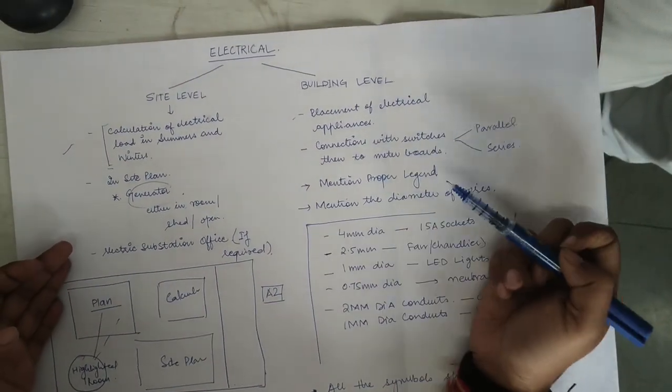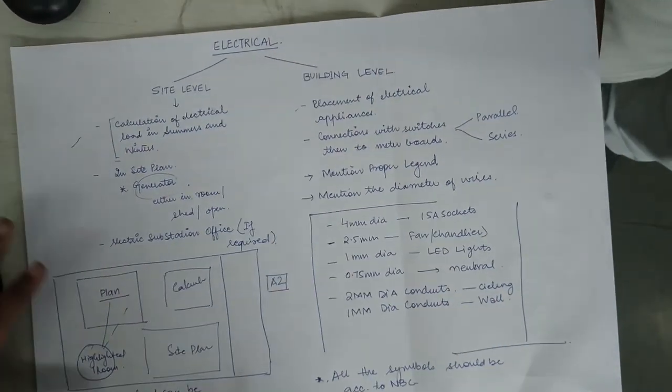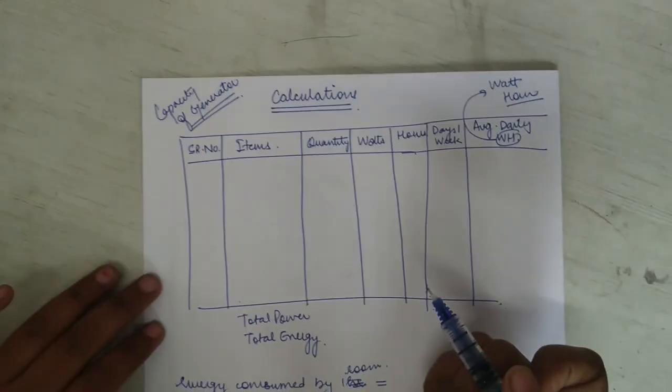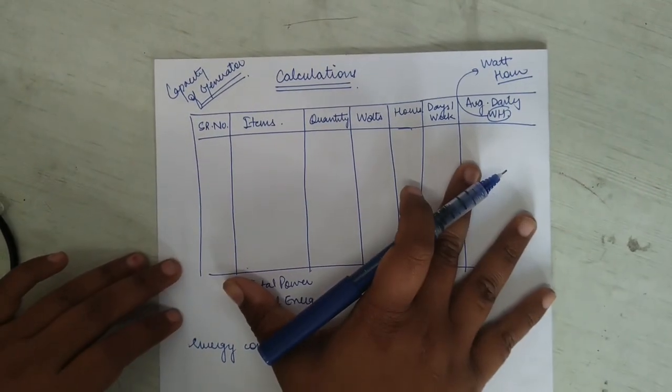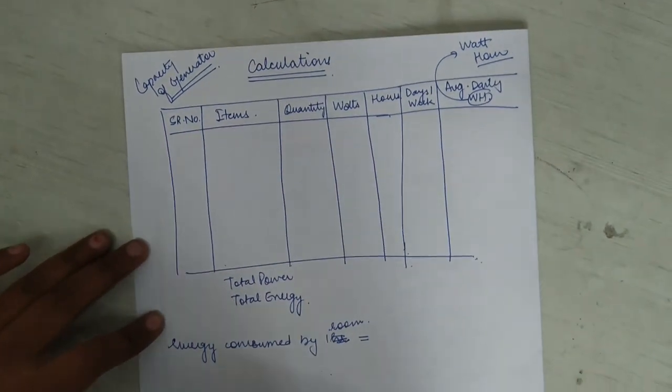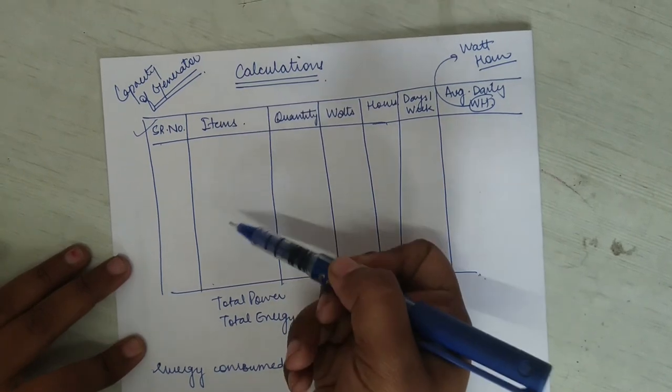Then at the building level, you have to talk about the placement of electrical appliances, connection with the switches. Legend should be very much proper and the diameter. Firstly, we will talk in detail about the calculation of electrical loads.